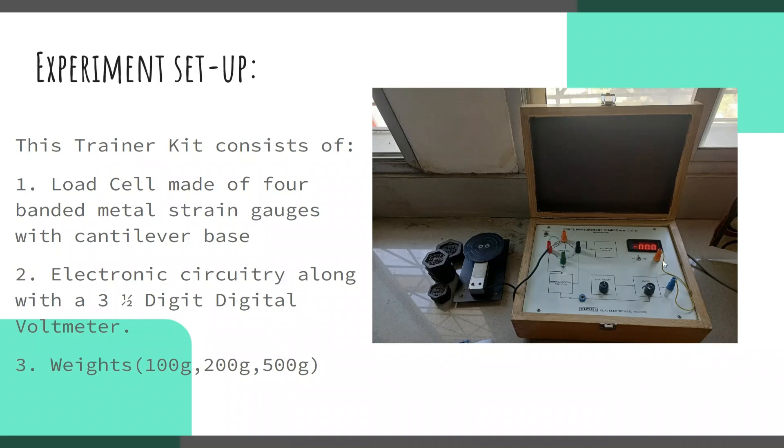Looking into the experimental setup, this is how our force measurement trainer model looks like. This model consists of an internal circuit which is composed of a full configuration Wheatstone bridge where the four arms are connected to the strain gauges that are attached inside the beam. This is a cantilever base and these are the weights. These weights act like force being applied.